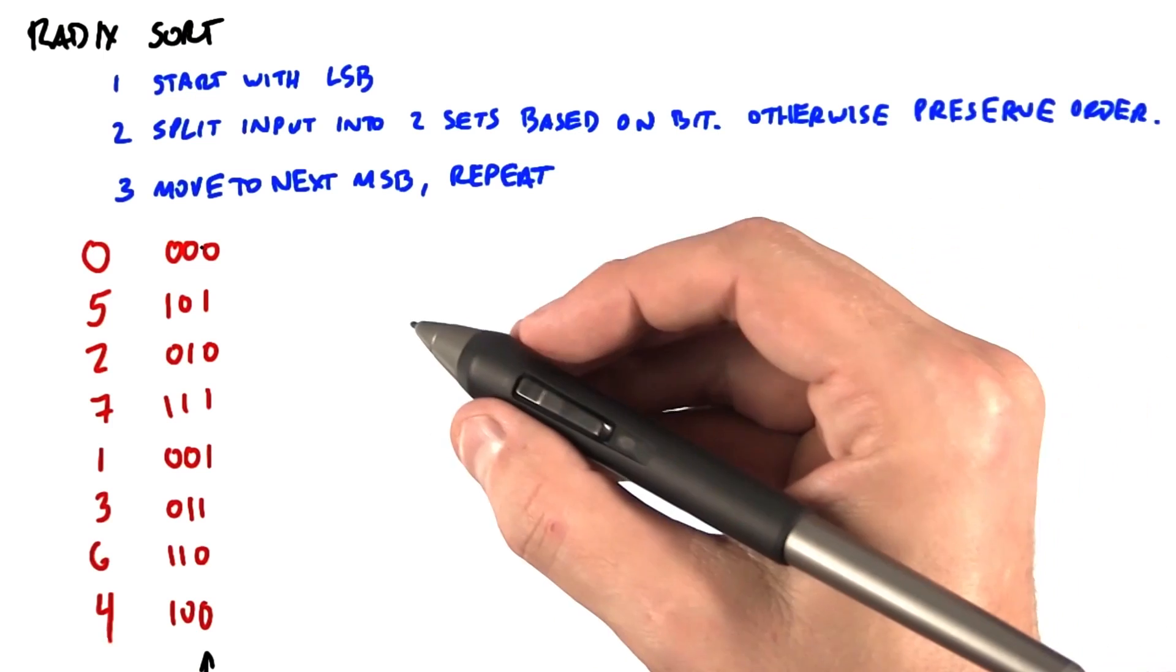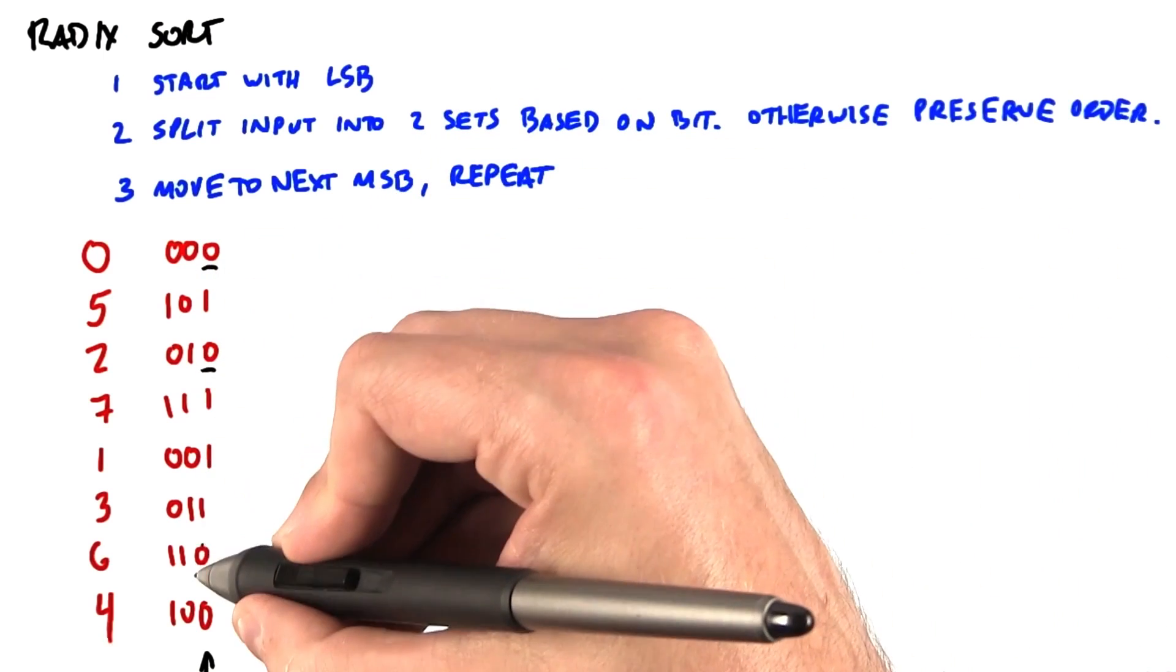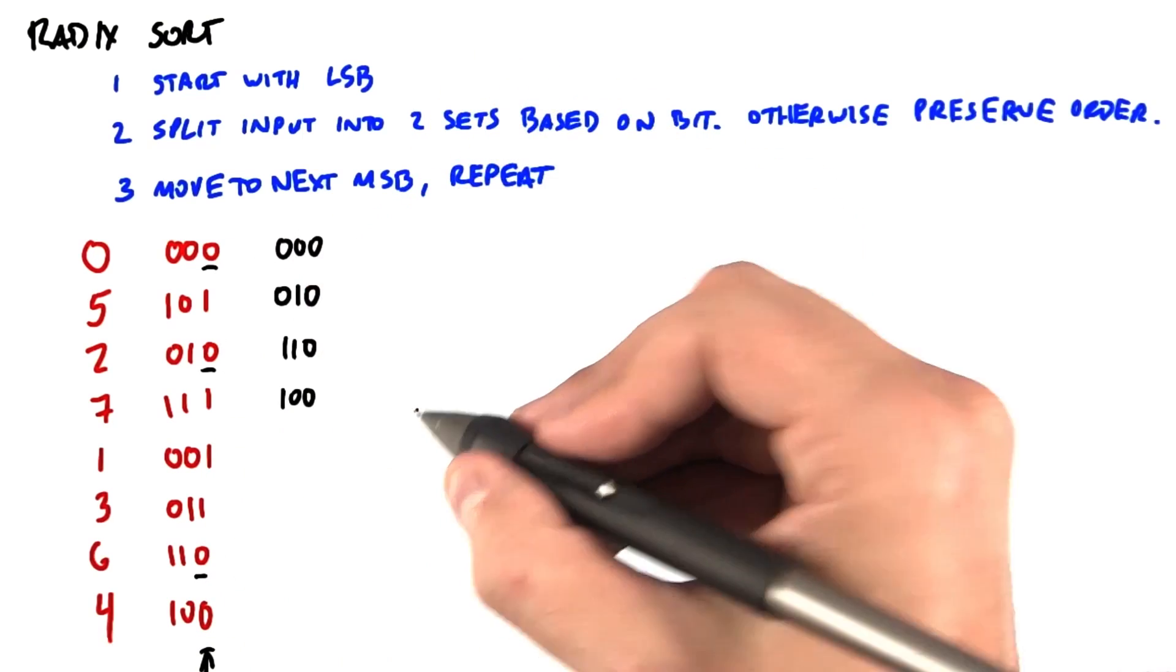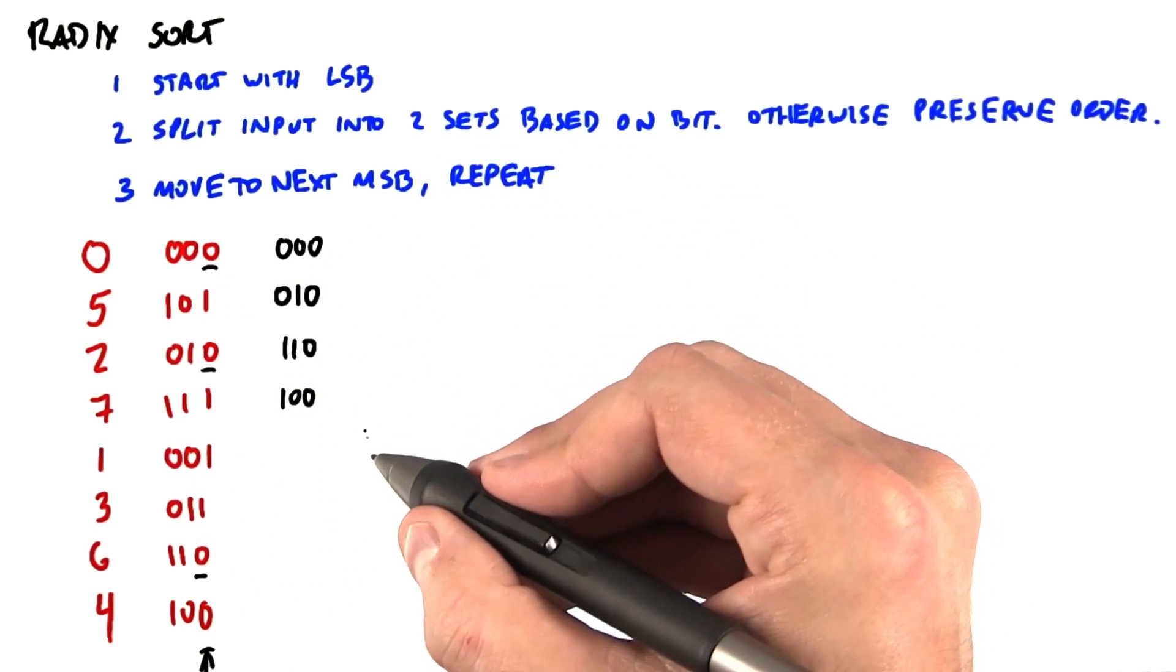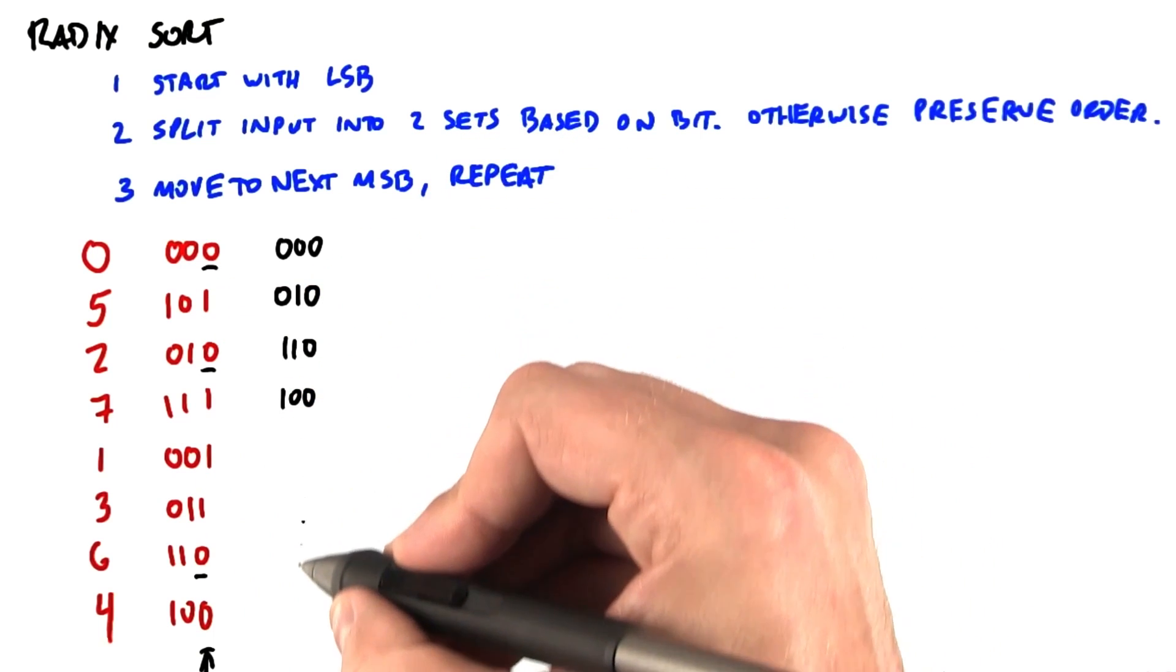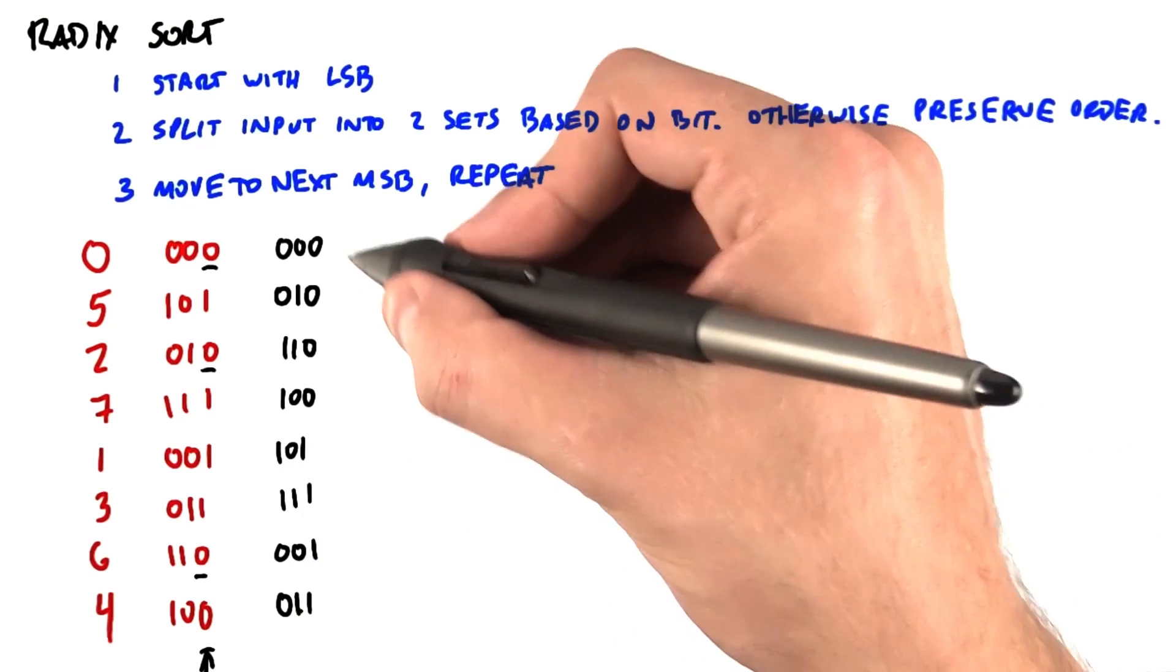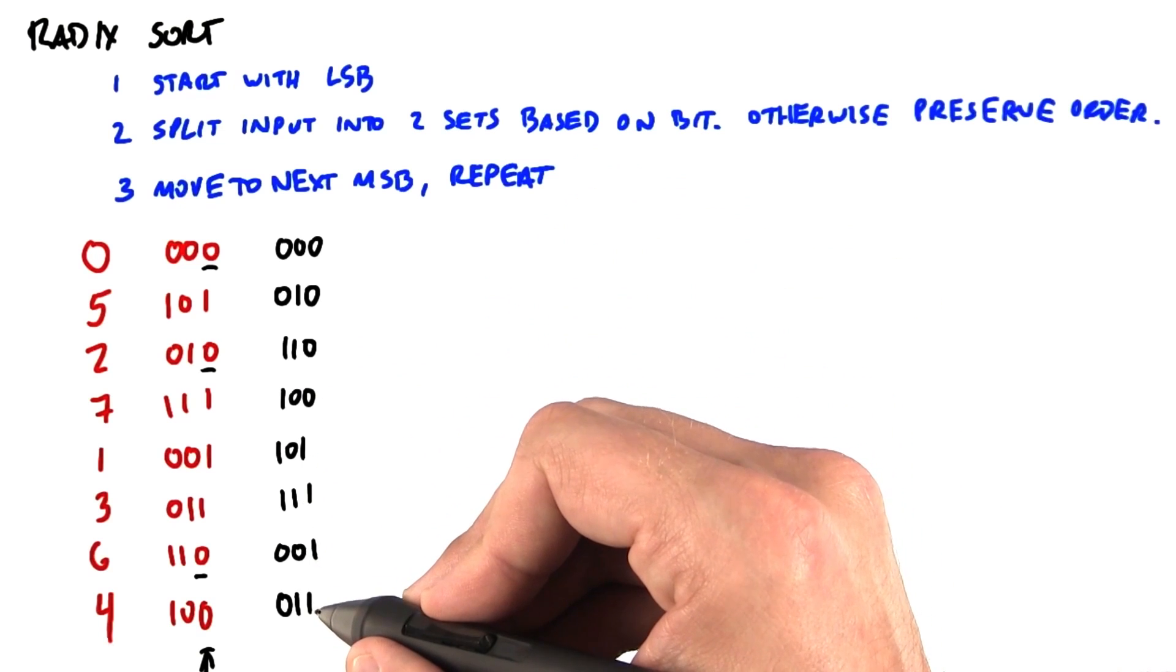And so we're going to start here with the least significant bit. So the way that we're going to do this is take all the elements that have a zero as the least significant bit, and we're going to otherwise maintain their order, but we're going to put them up top. Then we're going to take all the rest of the elements, those that have a one as the least significant bit, and we're going to again keep them in order and append them to the list that we've just created. So what this creates is a list where all the least significant bits are zero, and then a list where all the least significant bits is one.